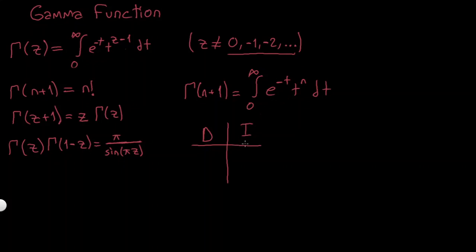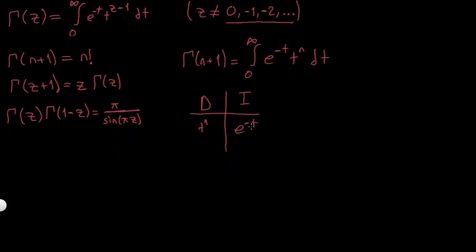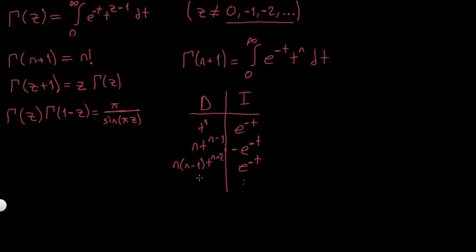Normally it would take a lot with the uv method. I'm going to take the polynomial for the differentiation side because I want it to vanish, and e^(-t) for the integration side. So e^(-t) integrated repeatedly just gives alternating minus/plus signs. And t^n differentiated gives n*t^(n-1), and if I do it again, n*(n-1)*t^(n-2), so it goes like this.